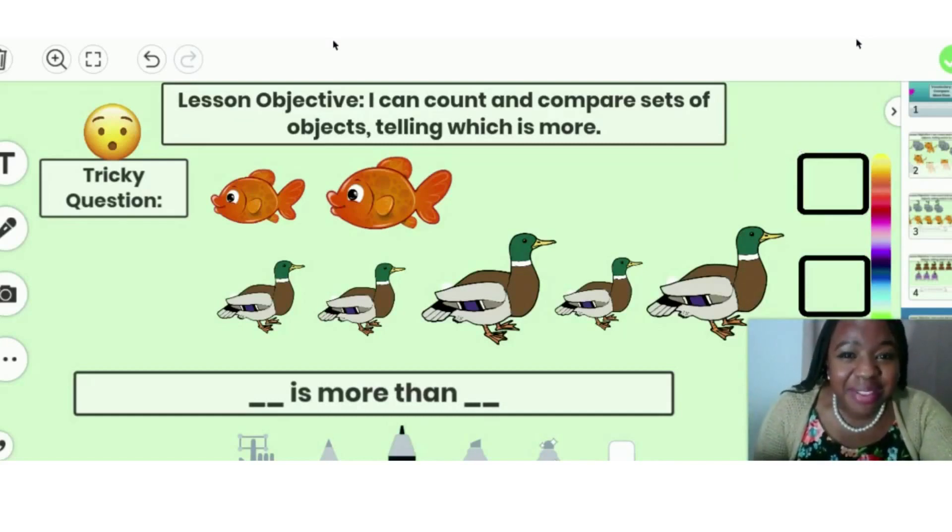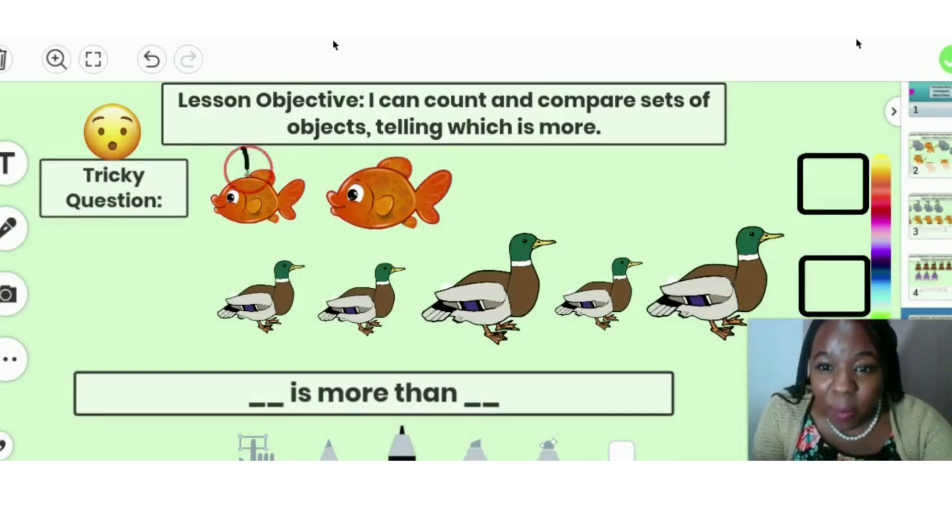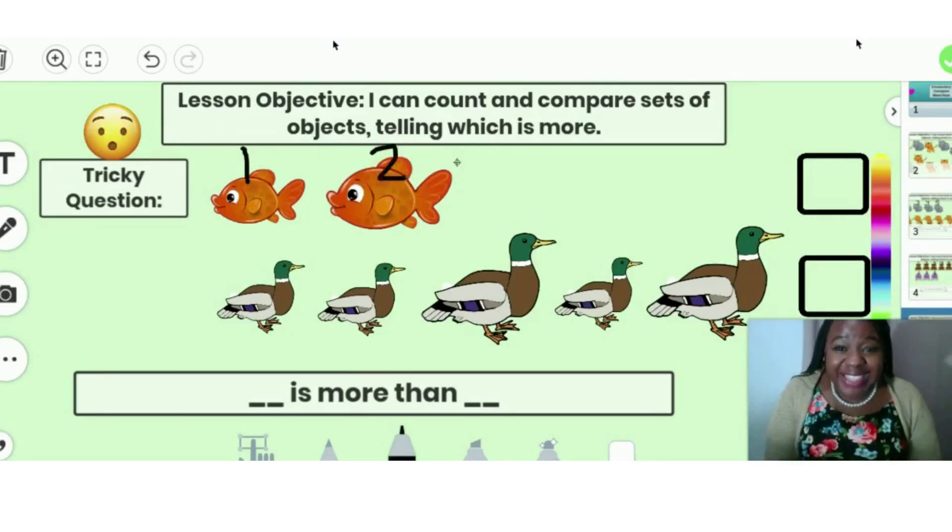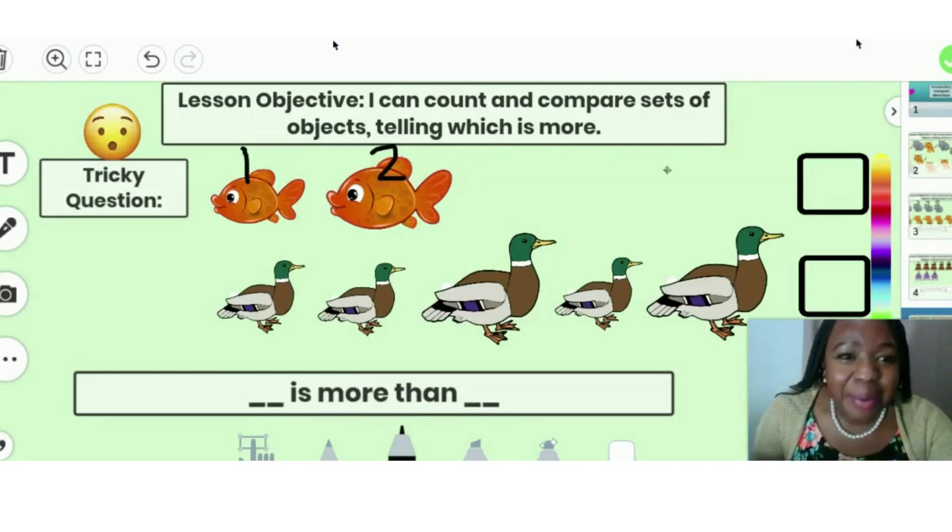First, I want you to count the fish. Great job. Did you say one, two? Two fish? If you did, you did a great job. So now we're going to write the number two.